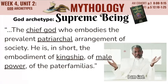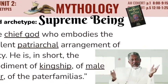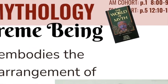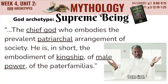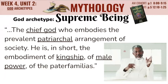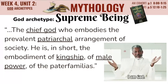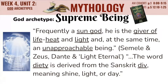First up is the Supreme Being. All of this information comes directly from The World of Myth, an anthology edited by David Adams Leeming, the textbook for our class. The Supreme Being, as Leeming says, is the chief god who embodies the prevalent patriarchal arrangement of society. He is the embodiment of kingship, of male power — the paterfamilias. The Supreme Being is frequently a sun god, the giver of life, heat, and light. He is also an unapproachable being, as we see in stories like that of Semele and Zeus or Dante and the light eternal. The word deity is derived from the Sanskrit div, meaning shine or light or day, so sunlight itself is directly related to the word we have for god.